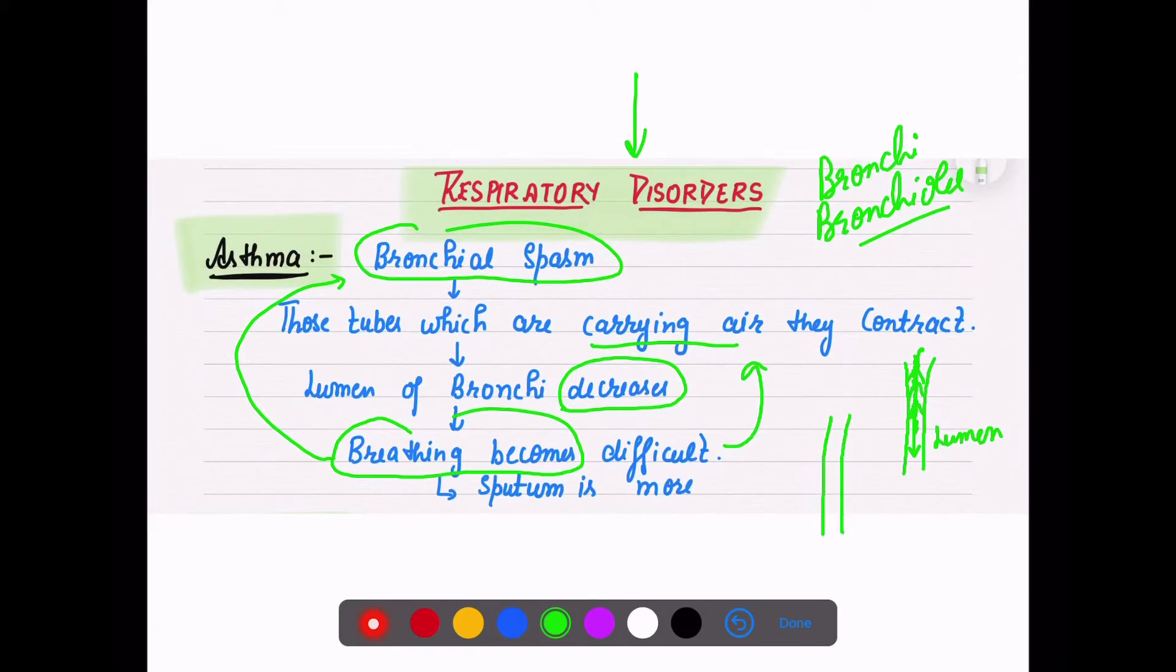In asthma, what is happening basically? Due to bronchial contraction, the area of bronchi in which air has to pass - the lumen - that area decreases, so breathing becomes very difficult.